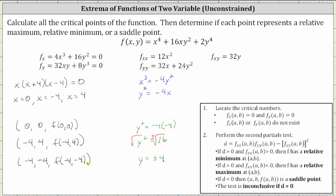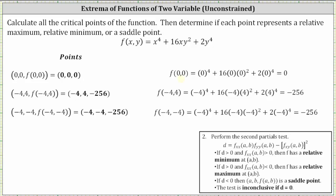Now let's find the function values to determine the z-coordinates. f(0, 0) is equal to zero. f(−4, 4) is equal to negative 256, and so is f(−4, −4). We have three critical points: (0, 0, 0), (−4, 4, −256), and (−4, −4, −256).